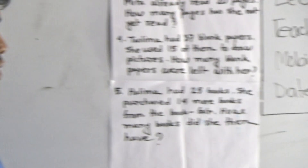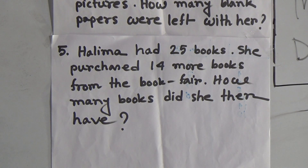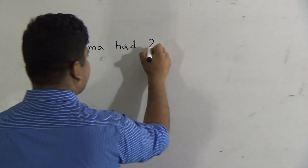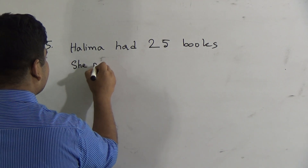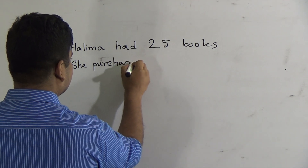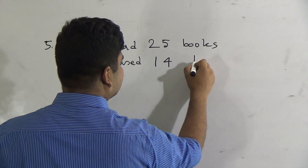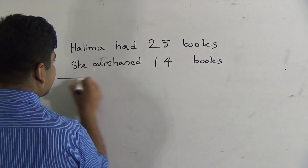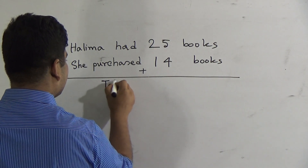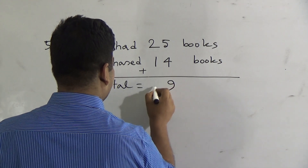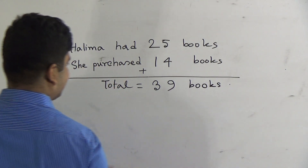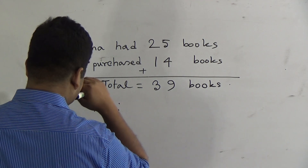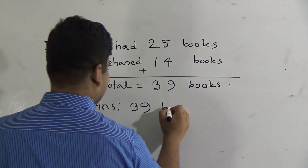Halima had 25 books. She purchased 14 more books. We do addition: five plus four equals nine, two plus one equals three. Total: 39 books. Now she has 39 books. As our solution is done, we must write the answer: 39 books.